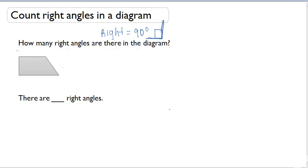In this diagram below, we have a quadrilateral with four angles. We're going to use this square to fill in each one of these angles to determine whether or not it's a right angle.